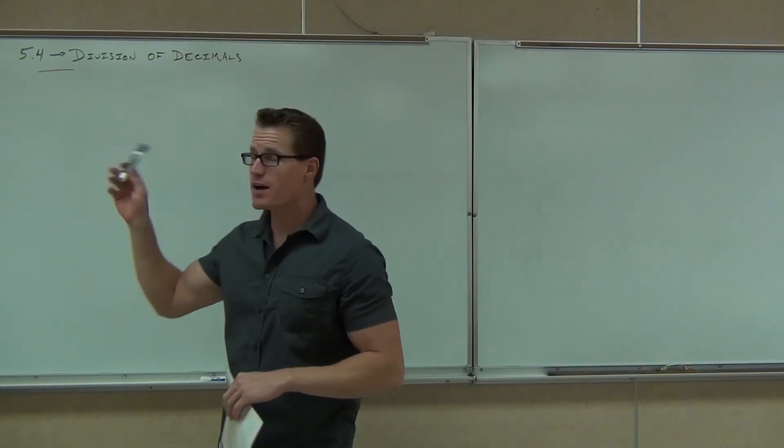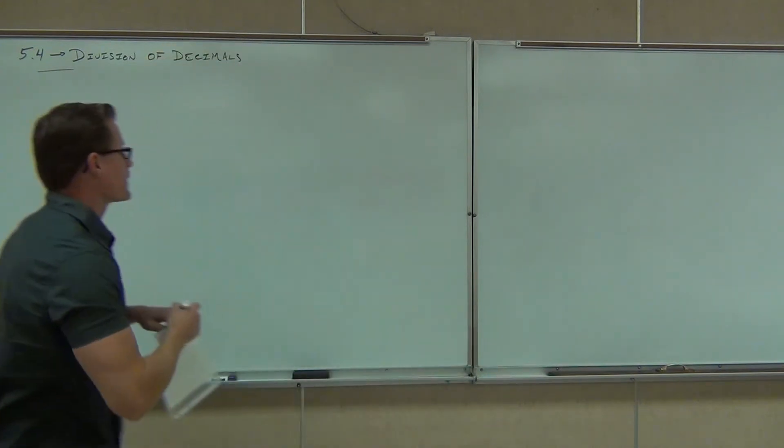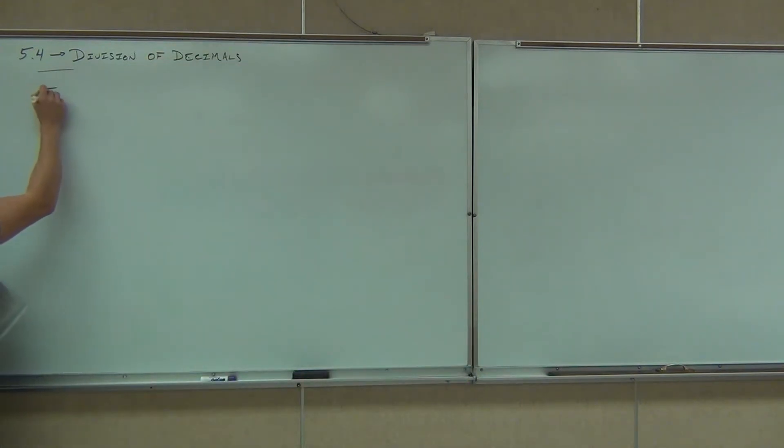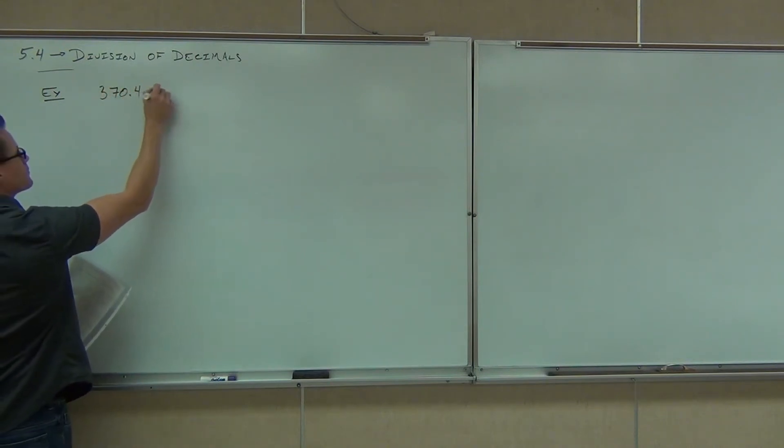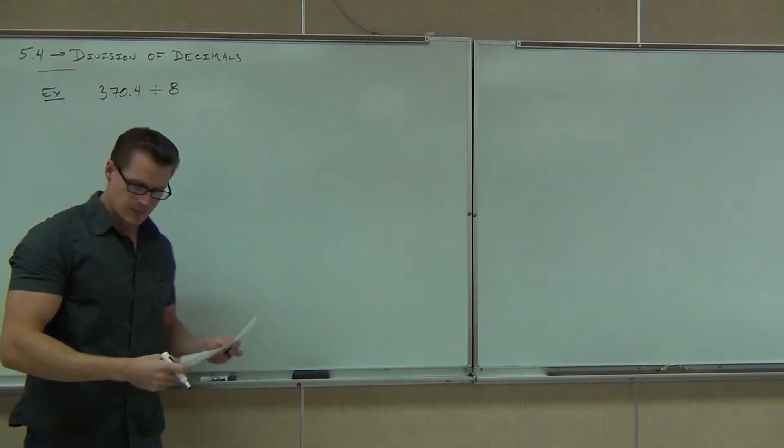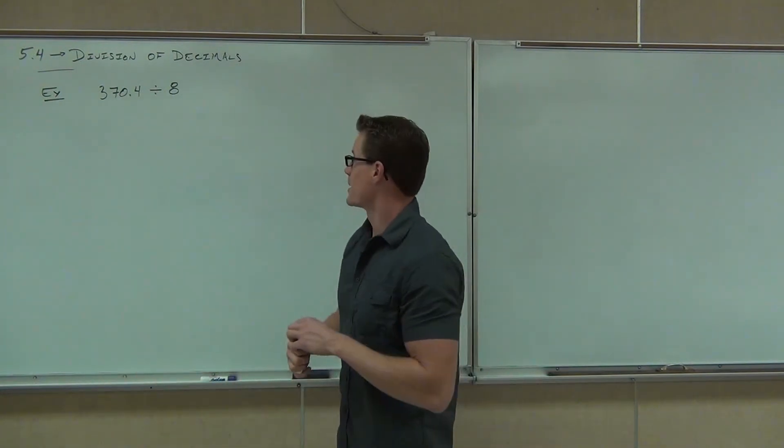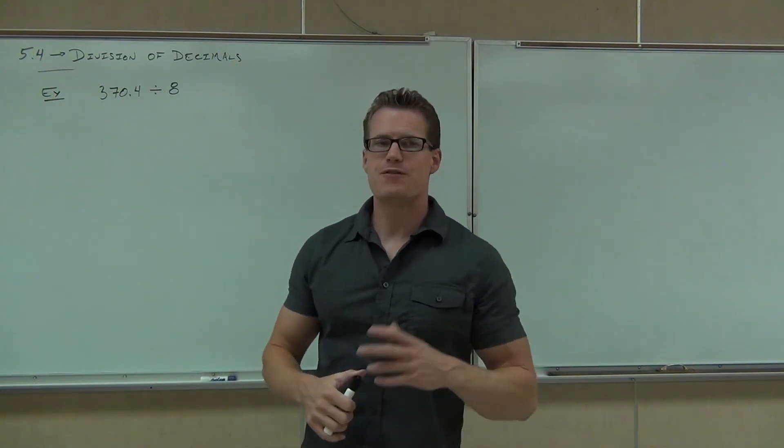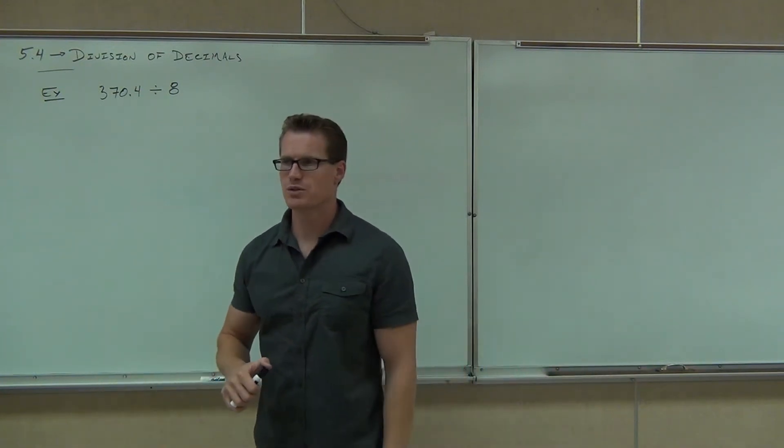All right, well today we're going to look at section 5.4, how to divide some decimals. We're going to go right into it and see how to do examples such as this. Now, if you were faced with this type of problem, 370.4 divided by 8, if you didn't have the decimal there, would you be able to solve the problem? Would you be able to do the divisions?